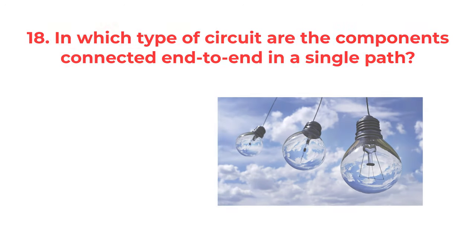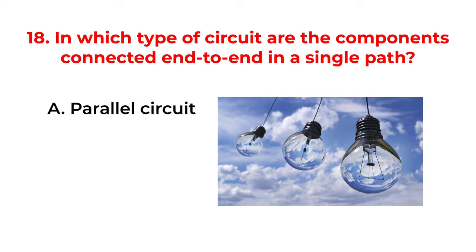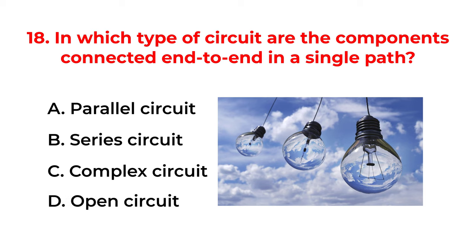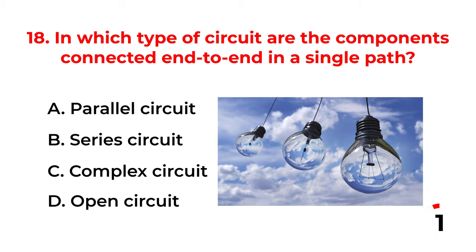In which type of circuit are the components connected end-to-end in a single path? A. Parallel circuit. B. Series circuit. C. Complex circuit. D. Open circuit. The correct answer is option B: Series circuit.